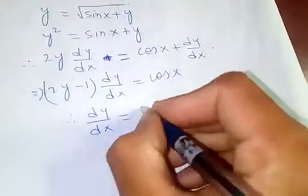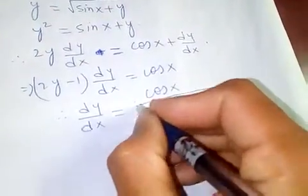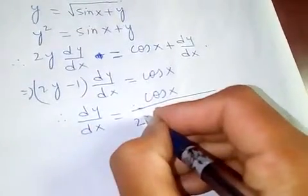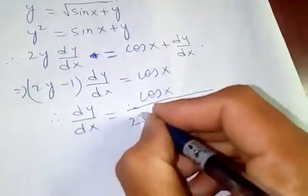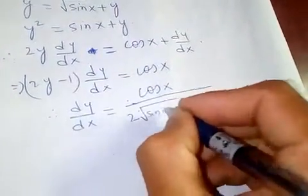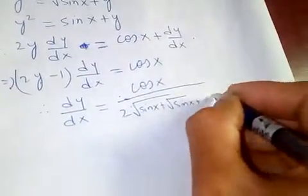Here let's put y. dy/dx equals cos x over 2 times square root of sine x plus square root of sine x and so on up to infinity, minus 1.